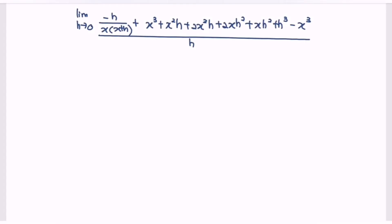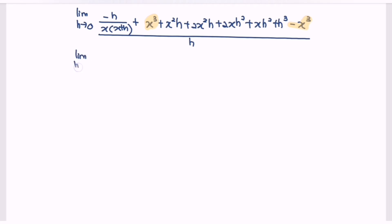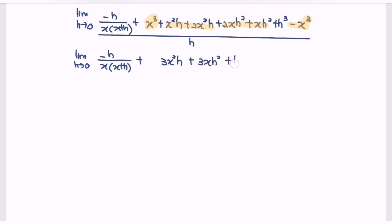Next, simplify further. Notice that we have x cubed minus x cubed, which cancel. Limit as h approaches zero of negative h over x(x plus h), plus — notice that we have common terms — so we can collect them to get 3x squared multiplied by h, plus 3x multiplied by h squared, plus h to the power of 3, over h.